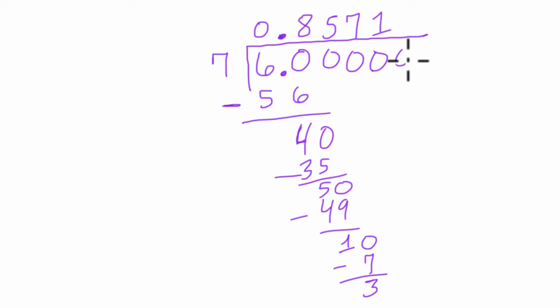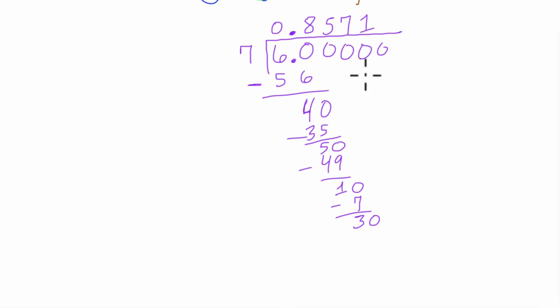Does seven go into 3? Let's think of it going into 30. So seven times 4 is 28. And 30 minus 28 is 2. Does seven go into 2? We can think of it as going to 20. And seven goes into 20 two times. Seven times 2 is 14. We subtract these. We get 6.